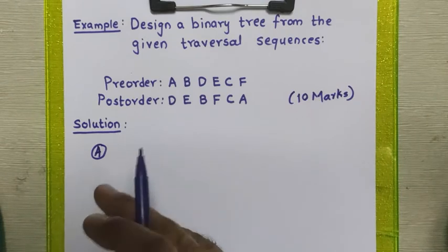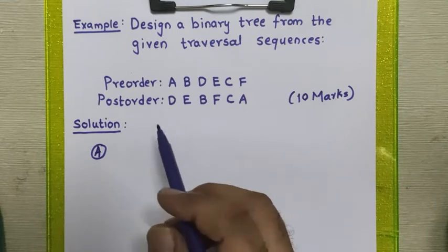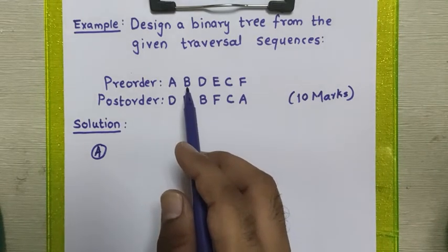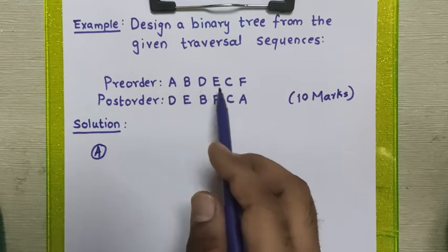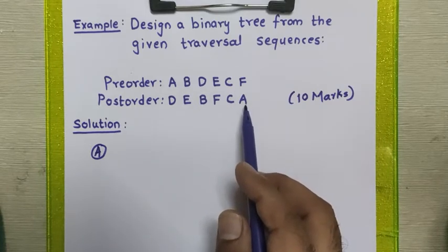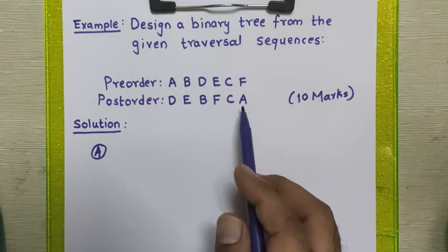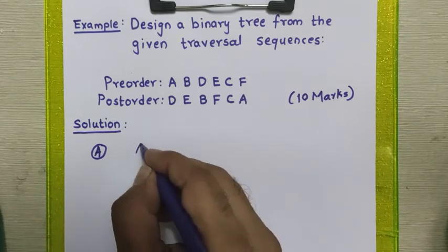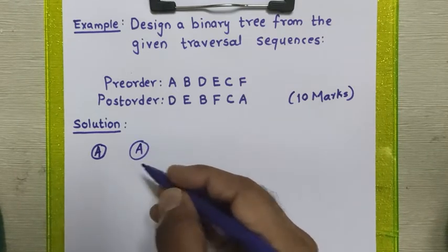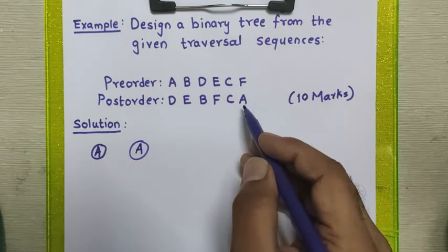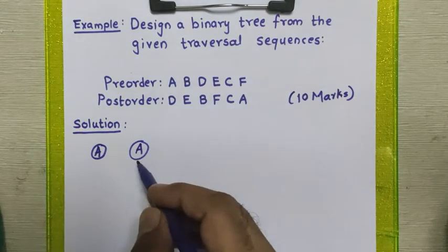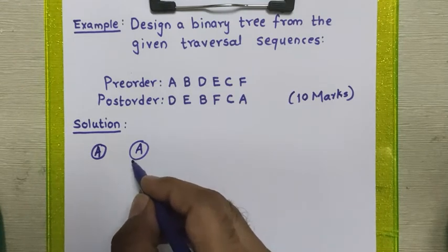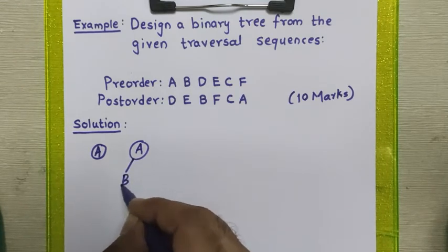After getting the root node, to get the left child and right child we will pick the next element from the pre-order sequence. That next element is B. We go and check it in the post-order sequence. If it appears before the root node, then it is part of that root node. B appears before node A, so B is part of root node A. Since root node A does not yet have a left or right child, we place B to the left side of node A.